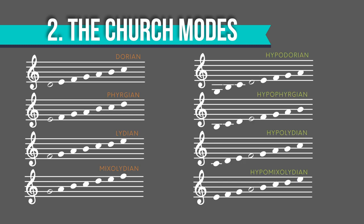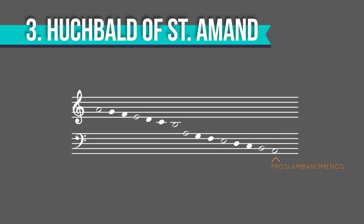Four of them they called authentic, and four of them they called plagal, and they gave them these really fun Greek names. You'll notice that the scale that goes from C to C is called Hypolydian — that's important. Next, we move on to another Frankish monk about a hundred years later called Hucbald of St. Amand. He wrote lots of stuff, including a poem about bald men, but today we're mostly concerned with a treatise he wrote around 880.